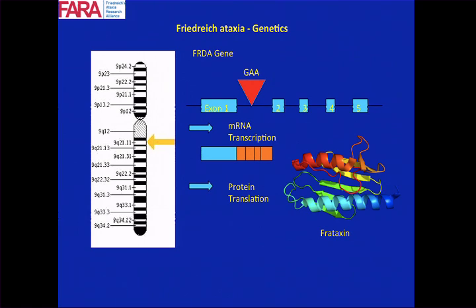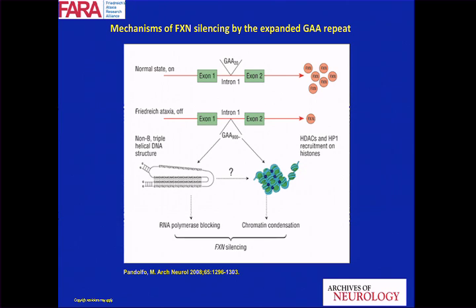Just very briefly: the GAA expansion in Intron 1 of the frataxin gene causes a reduction in the amount of transcript — the mRNA. DNA is transcribed into mRNA, which is the messenger to make a protein, in this case frataxin. The outcome of having this expansion in the intron is that less mRNA is produced, and as a consequence, not enough protein is made.